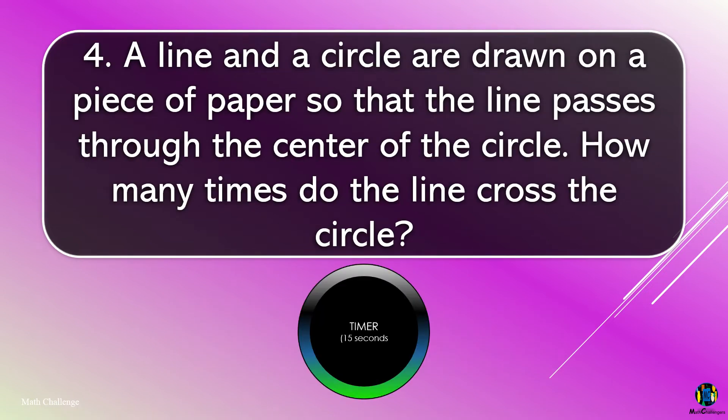Question 4. A line and a circle are drawn on a piece of paper so that the line passes through the center of the circle. How many times does the line cross the circle?